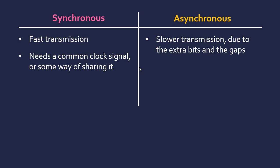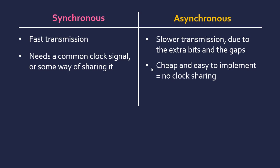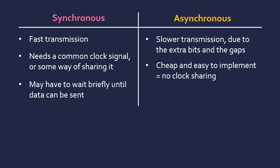Synchronous does require a common clock signal or some way of sharing one. Within a single device where a clock signal goes to all components, that's quite simple. But with two separate devices, sharing a common clock signal is not easy, which is why asynchronous might be better — you don't have to share the clock, making it cheaper and easier to implement. With synchronous you may also have to wait briefly until the clock reaches the position at which you're allowed to send, and that delay may build up over multiple messages. Despite this, synchronous is still faster overall. Asynchronous, by contrast, can transmit whenever you're ready — you don't have to wait.